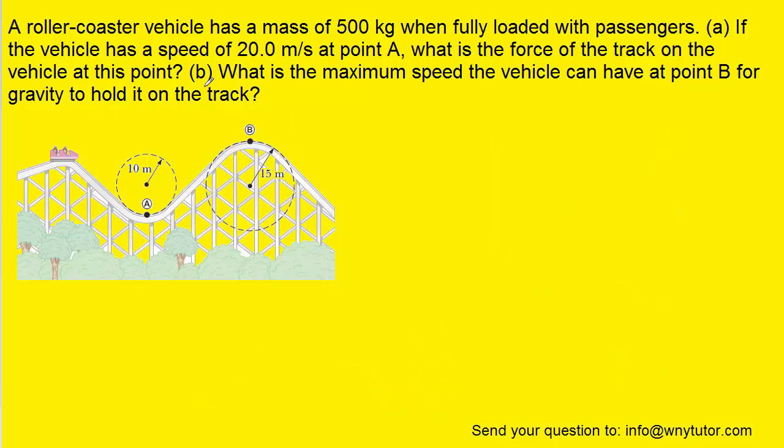For part B of the question, we're going to draw a free body diagram of the vehicle at point B. Ordinarily, the free body diagram at point B would be the same. We'd have the downward gravitational force of mg and then the surface of the track pushing up on the vehicle.